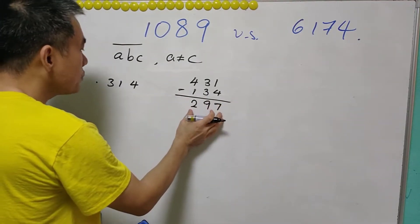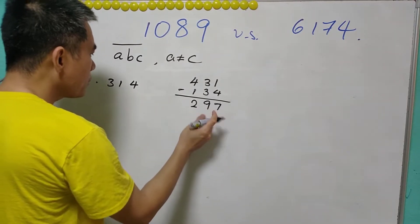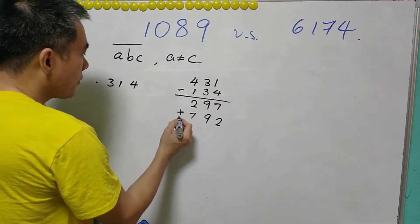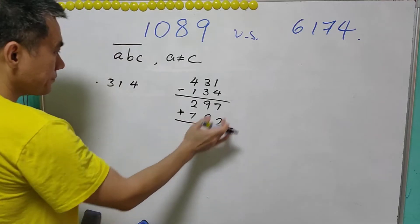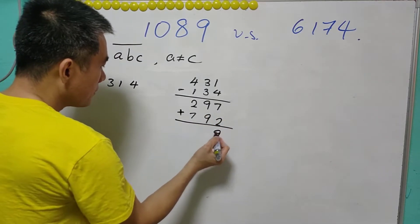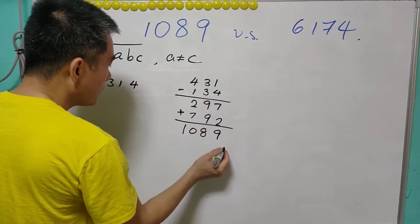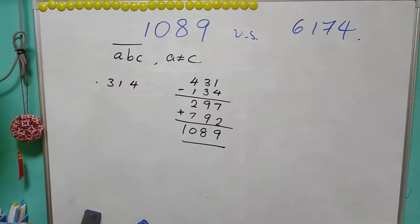From the answer 297, we will reverse the order to get 792. And we take the sum of these two numbers and it will be 1089. This is how we get the first one.